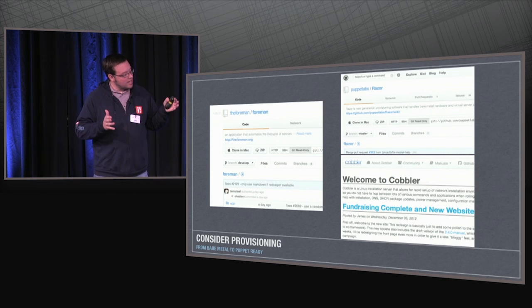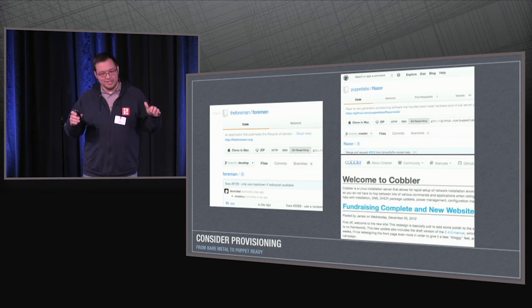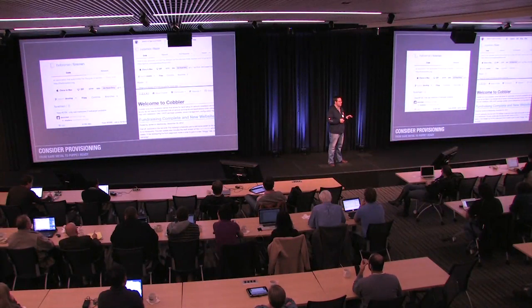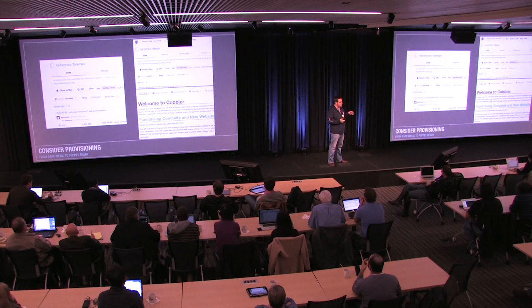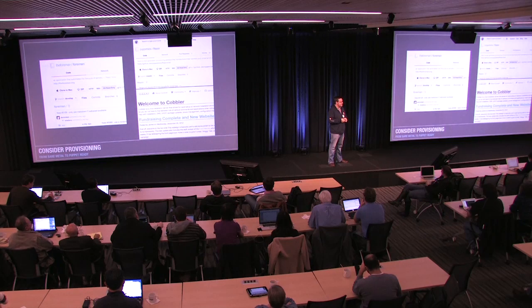The standbys are there: Cobbler, which is getting a lot better; Foreman, which is a very opinionated end-to-end provisioning system including DHCP and DNS and everything else — if that fits your model, great. And then Razor is the new fun project. I run Razor mostly because I'm trying to develop it. It's a little more rough-edged and might require more work on your part, but it's pretty slick.